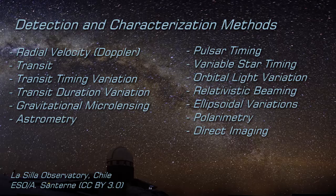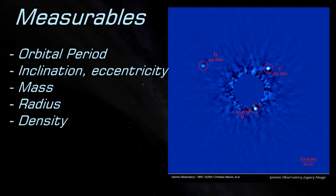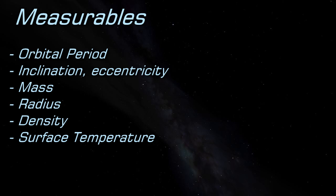Exoplanets can now be directly imaged. Measuring the amount of infrared radiation from a planet before it is eclipsed by its host star allows its surface temperature to be determined and even temperature maps can be produced.